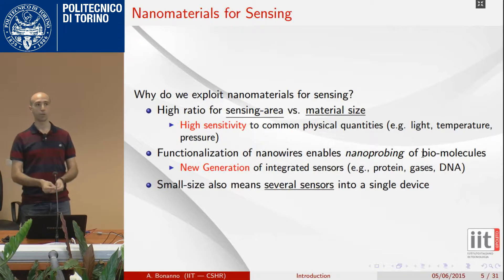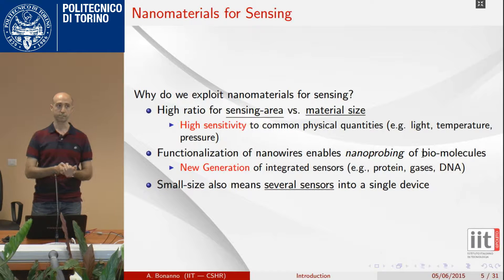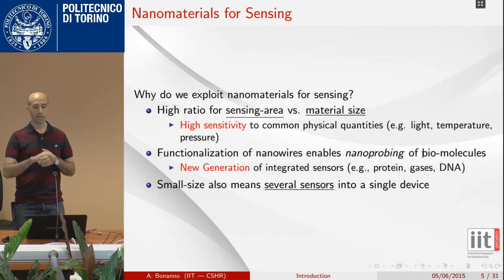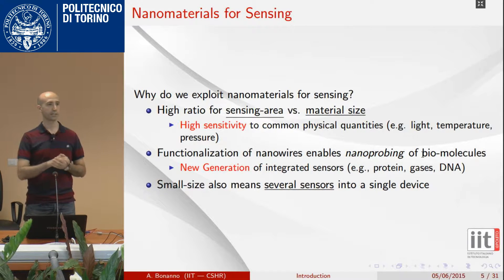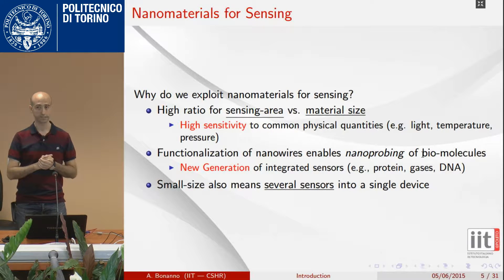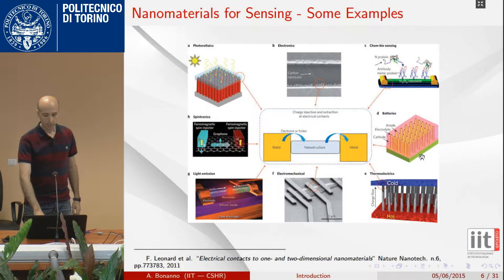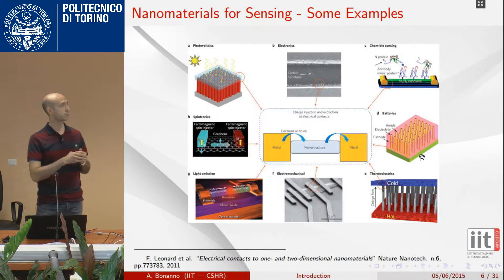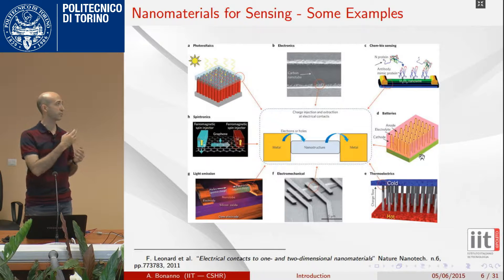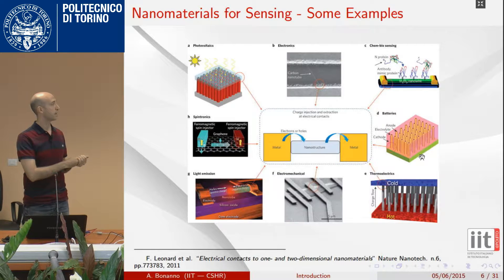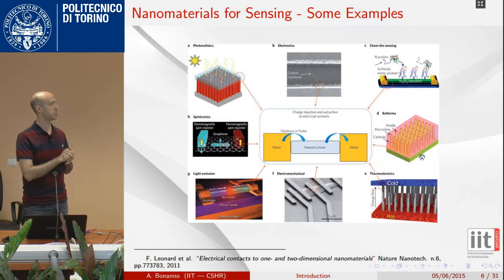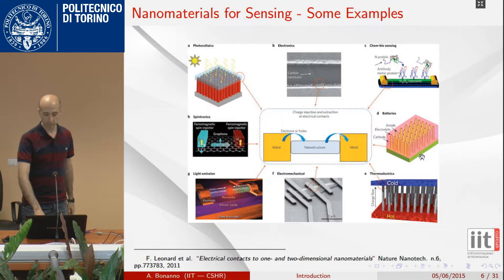Moreover, the small dimension of these sensors helps us to conceive a large number of sensors in a single device. These are only some examples of sensors that can be used for energy, chemistry, electronics, light sensing, or biosensing in general.